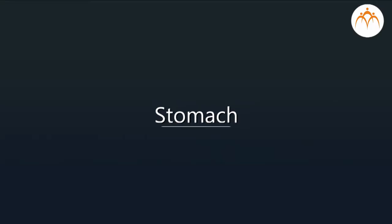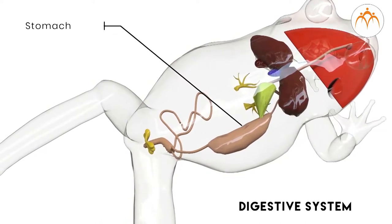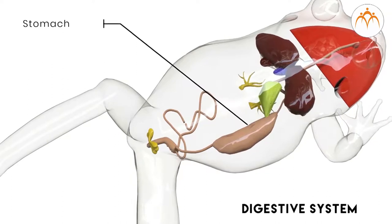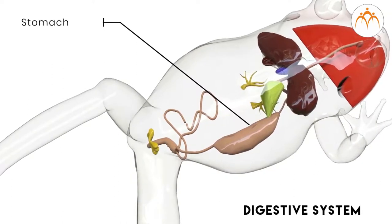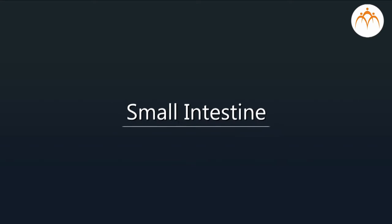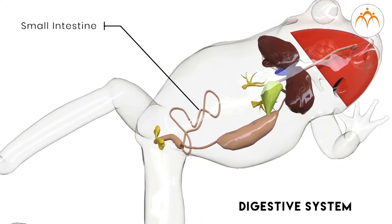Stomach. Now students, look at the left-hand side of the model. You will see a muscular bag-like organ — that is the stomach. Food eaten by the frog is partly digested here. Small intestine. The stomach joins a coiled tube-like organ that is the small intestine. The small intestine of frog is also coiled like that of humans. Food is completely digested in the small intestine.